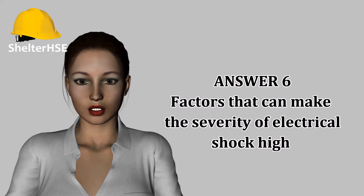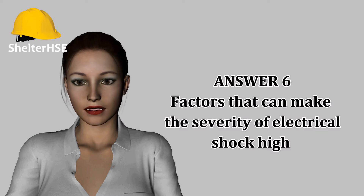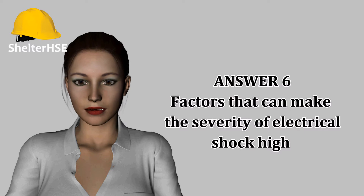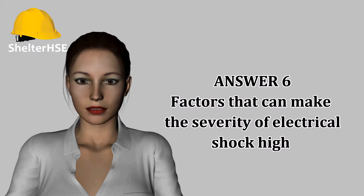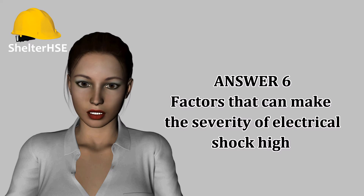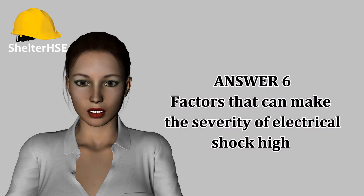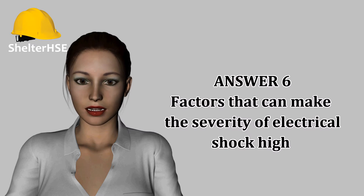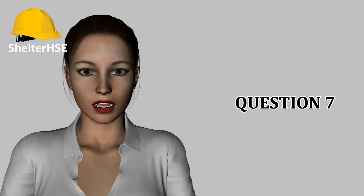Resistance and skin condition — clothing or anything that reduces resistance, such as humidity or wet conditions, can make the shock worse. Contact surface area — the more skin in contact, the more severe the injury. Environmental factors such as metal surfaces, humidity, and similar things that increase conductivity will also increase shock severity.